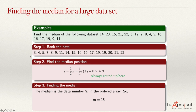The median will be the data in position number 9, and this is the number 15. Counting: 1, 2, 3, 4, 5, 6, 7, 8, 9 — the data in position 9 is the median. After you get I, the only thing you need to do is start counting, and when you get the data in that position I, that will be the median. Note that I is not exactly the position of the median — it's an approximation of the position.